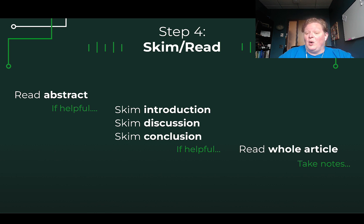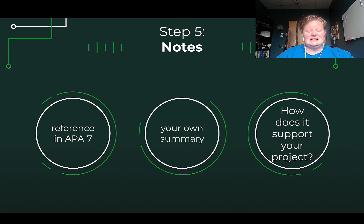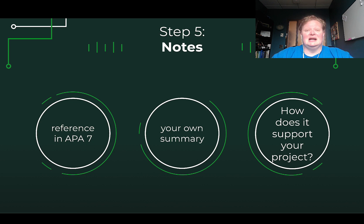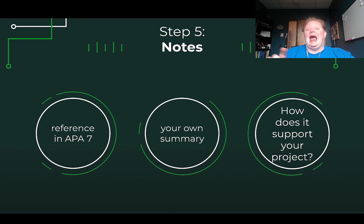Once you're reading the whole article because it aligns with your questions, here are the notes I recommend. Make sure you get the reference in APA 7 format. Write your own summary of the article in a paragraph or so — it's not easy, but it's great practice because it helps you figure out how you'll use the article. And make sure you note connections to whatever you're researching.